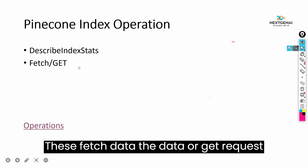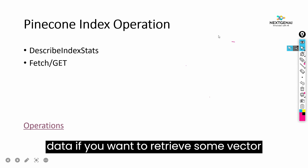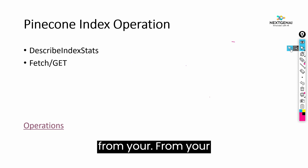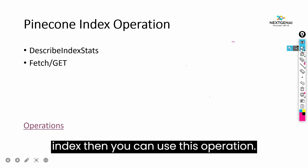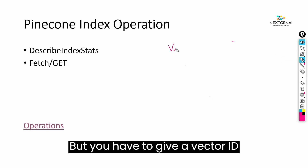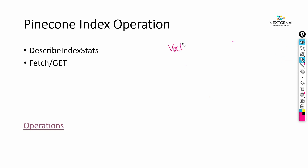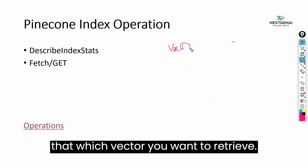The fetch operation, or GET request: if you want to retrieve a vector from your index, you can use this operation, but you have to provide a vector ID to specify which vector you want to retrieve.